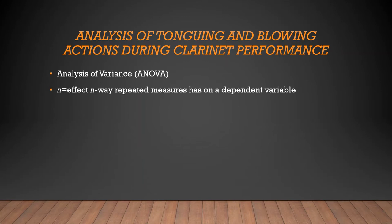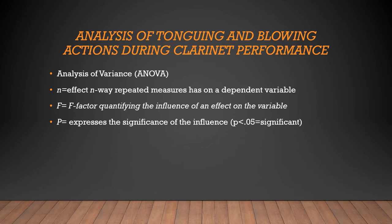N represents N analysis analyzes the influence N effects has on a dependent variable. For example, if portato articulation is the dependent variable, N would represent either dynamics or tempo in relation to that variable. F is the F factor quantifying the influence of an effect on the variable. P is the P value which expresses the significance of the influence. When P is less than 0.05, then it can be concluded a significant effect is happening, which also indicates a high F factor. Another way of thinking of it is the closer P is to 0, then the more significant of an influence is occurring.